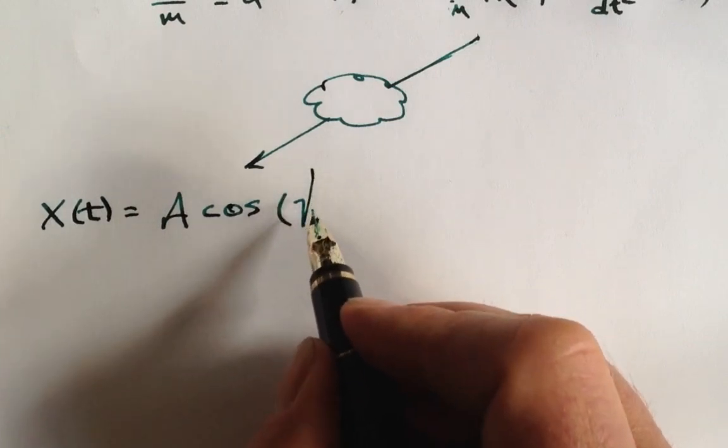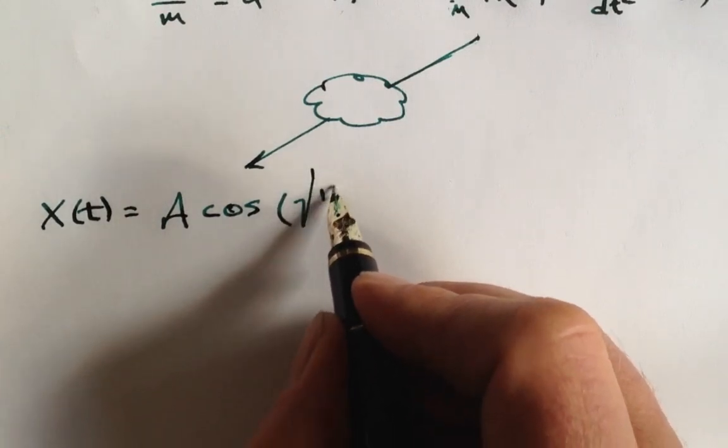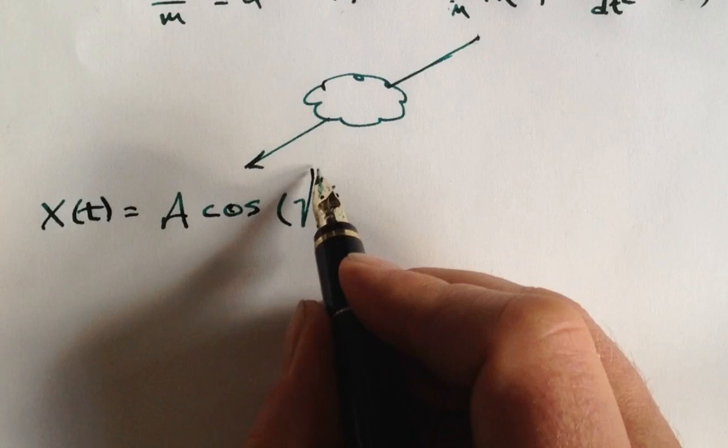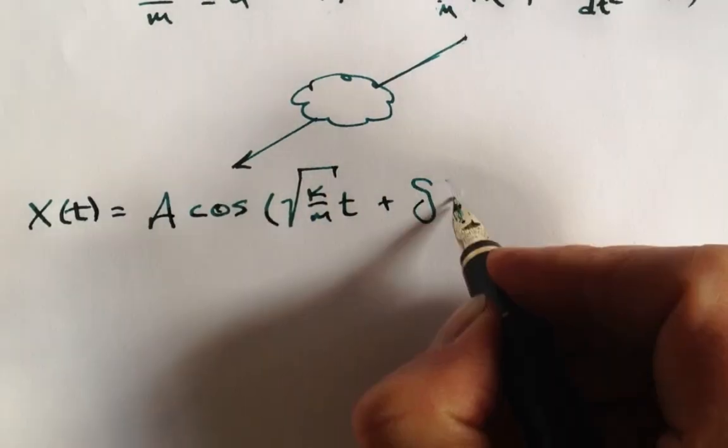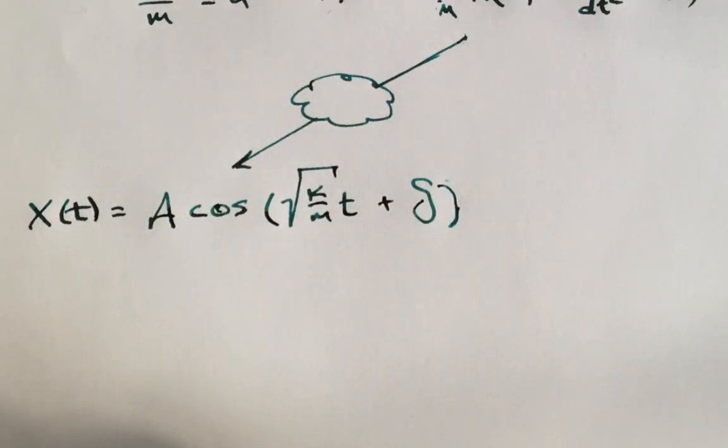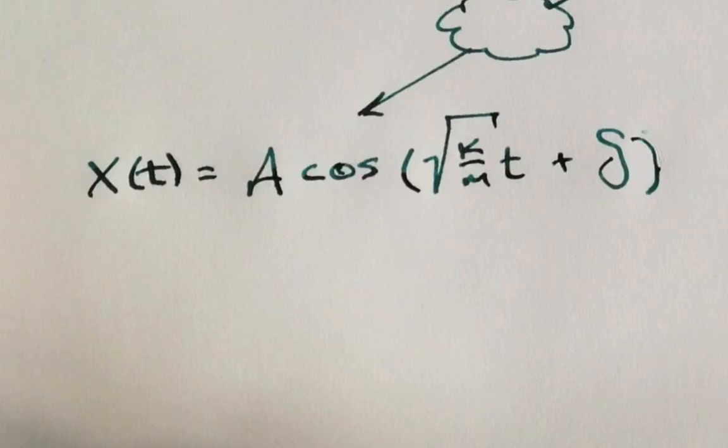What requires some thought is the choice of coefficients. What can you put in front of the t so that when you take the derivative twice, you get a k over m out front? Root k over m should do the trick. What are those other values, the A and the delta? Those are things I added when I looked at the differential equation and I pulled that solution out of thin air.